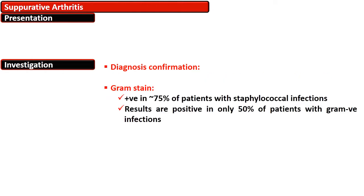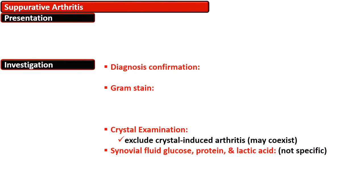Gram stain identifies the organism and yields positive results in 75% of patients with staphylococcal infection, and 50% positive results with gram-negative organisms. Crystal examination should also be done on joint fluid, as there may be co-existence of other pathology such as gout or other crystal-induced arthritis. Synovial fluid glucose, protein, and lactic acid are non-specific.